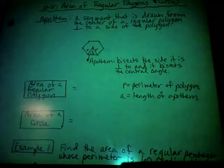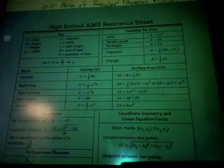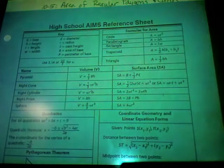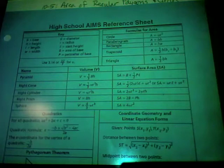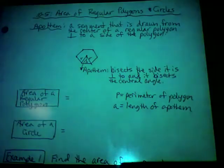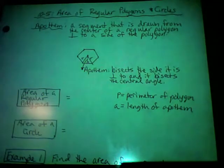On your AIMS reference sheet, there is no formula for the area of a pentagon, hexagon, septagon, octagon, or decagon. But we have to have a way to find the area of those figures. Somebody has figured out a way, and we're going to use what's called the apothem.